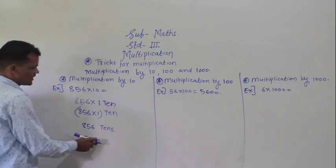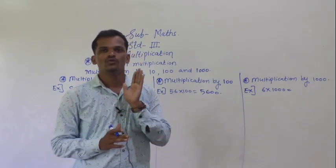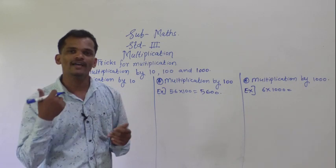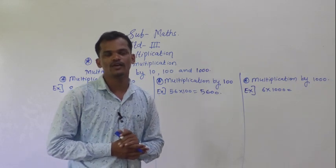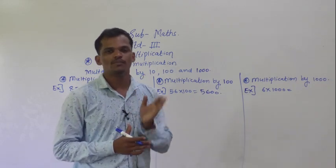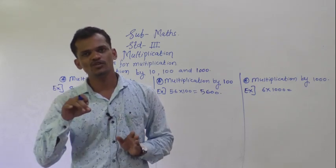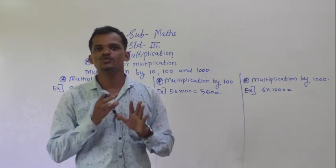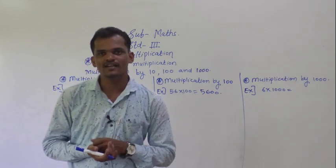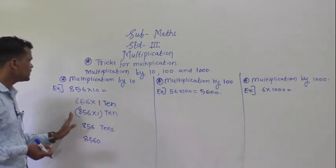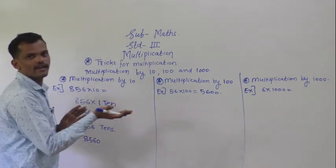So 856 becomes 8560. What we have learned here: if you have to multiply any number by 10, just put one zero at the right of that number. For example, 56 into 10 — after 56 put one zero, so 560 is the product. There is no need to calculate; using this trick you can find the answer directly.